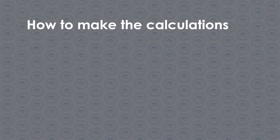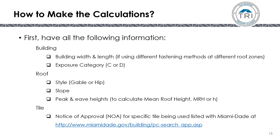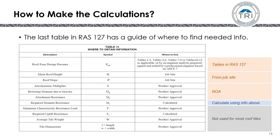To make calculations with the new RAS-127 standard, you need the following information: the building width and length, the exposure category (C or D), the roof style (gable or hip), the roof slope, and the peak and eave heights to calculate the mean roof height, as well as the Notice of Approval for the specific tile being used. The very last table in RAS-127 has a guide showing where to find the needed information.